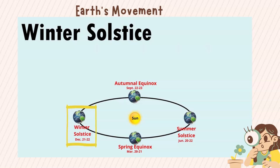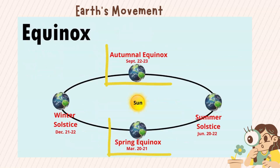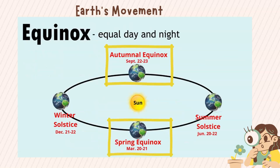Winter solstice: the Northern Hemisphere experiences its shortest daylight period while the Southern Hemisphere experiences its longest daylight. It can happen on December 21 to 22. Equinox means equal day and night.